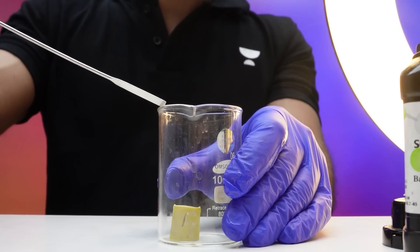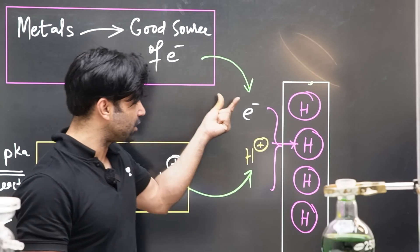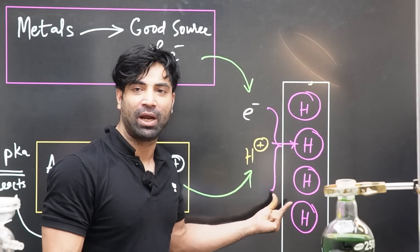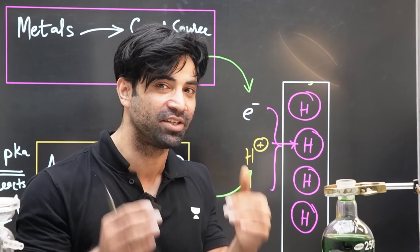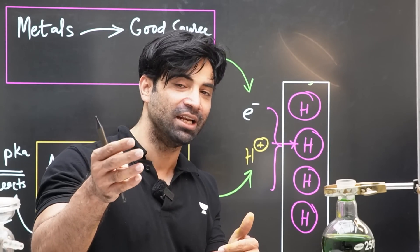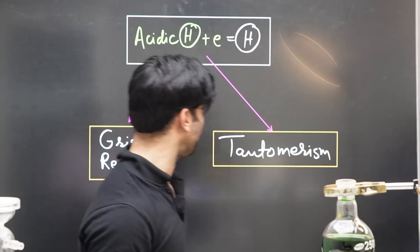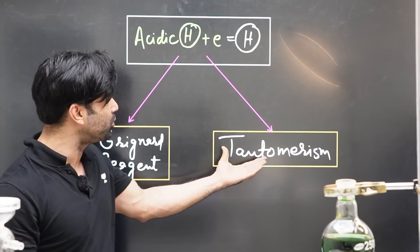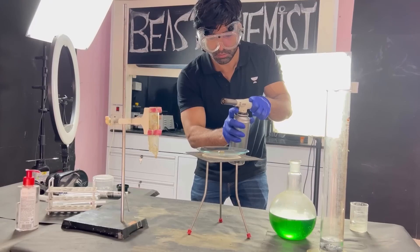Inside a glass container submerged in paraffin lies shiny sodium metal. The acidic hydrogen gains an electron and gets converted into atomic hydrogen. If you understand this concept and this reaction, then JEE Advanced topics like Grignard reagent and tautomerism become very easy for you.